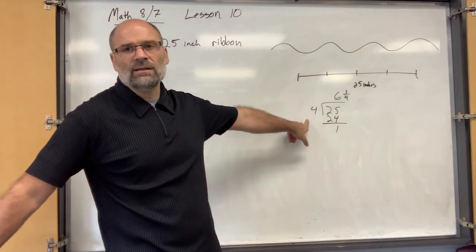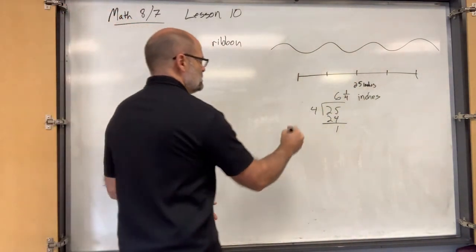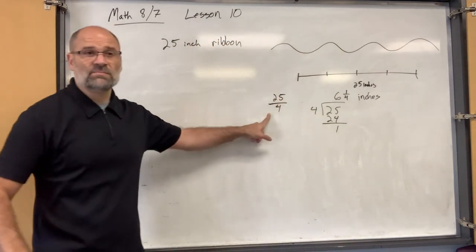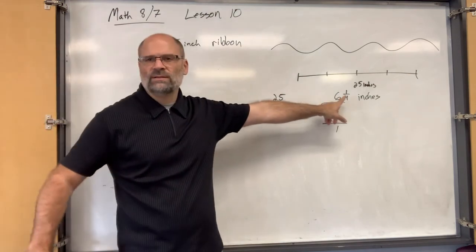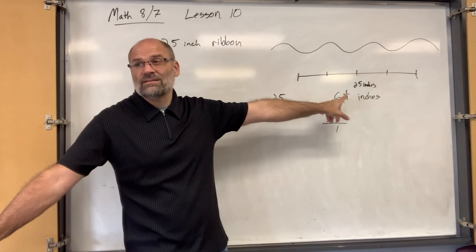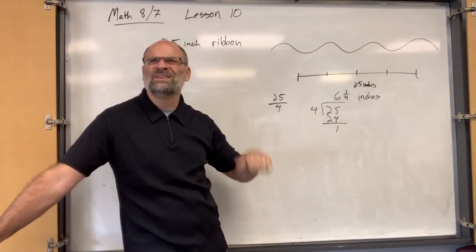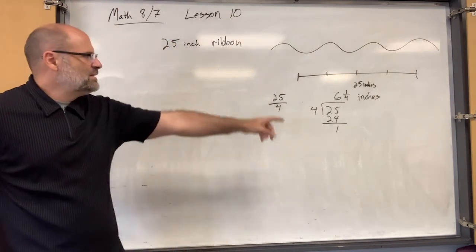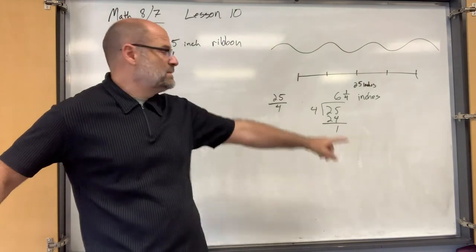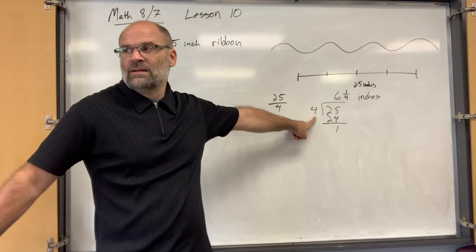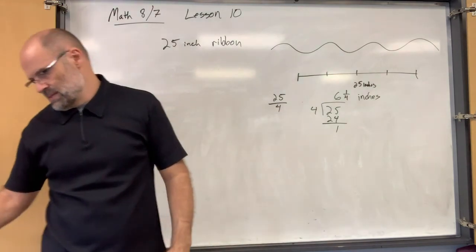The answer is six and one-fourth inches. This is basically taking an improper fraction — 25 fourths — because that's just a division problem: 25 divided by four. And this is how you change an improper fraction into a mixed number. 'Six and a fourth' is more understandable than '25 fourths.' The number you're dividing by is called the divisor — which is also the denominator in the fraction.